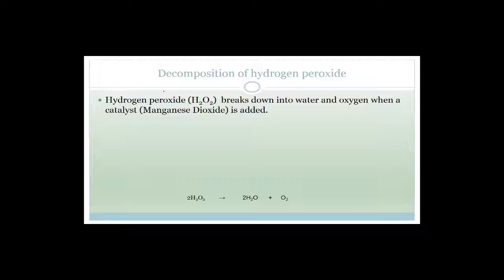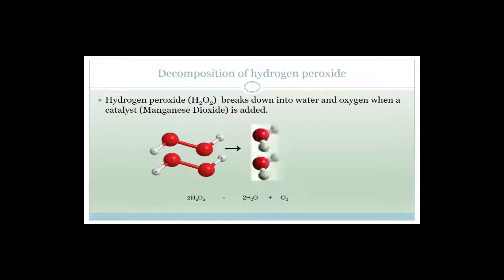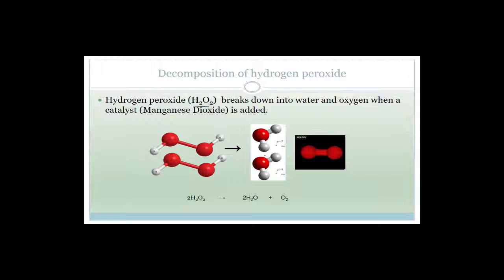Hydrogen peroxide (H₂O₂) breaks down into water and oxygen when a catalyst of manganese dioxide is added. So 2H₂O₂ breaks down into 2H₂O plus O₂. This is an example of the decomposition of hydrogen peroxide.